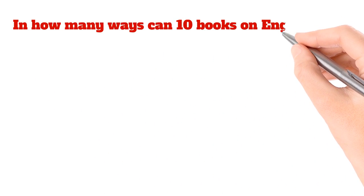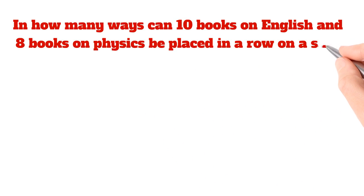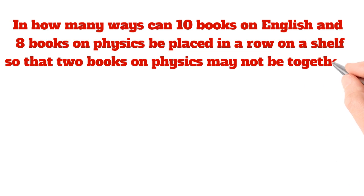In how many ways can 10 books on English and 8 books on physics be placed in a row on a shelf so that 2 books on physics may not be together?